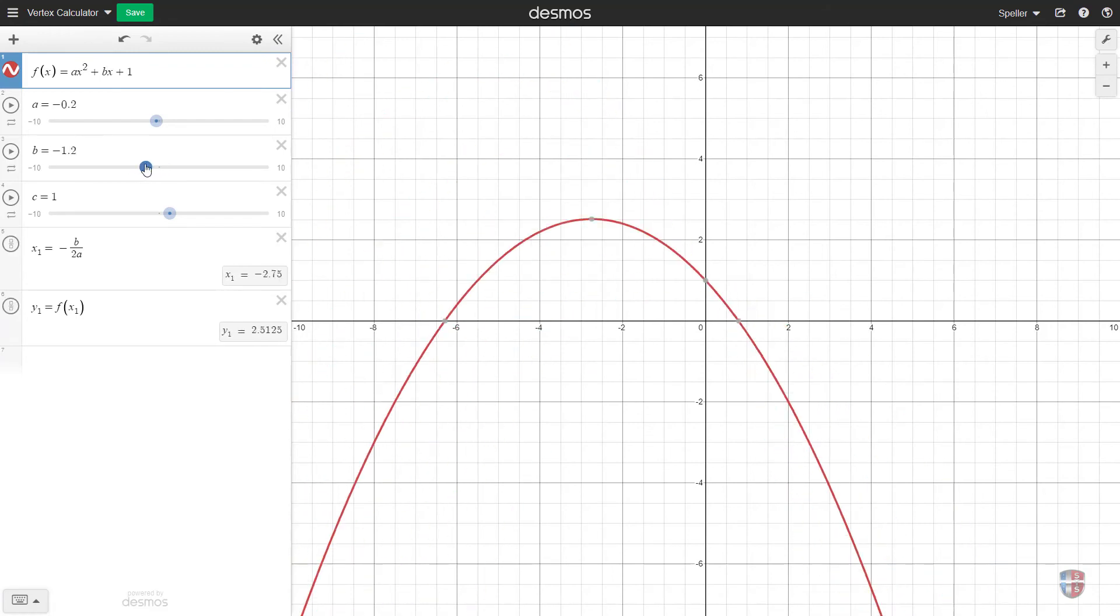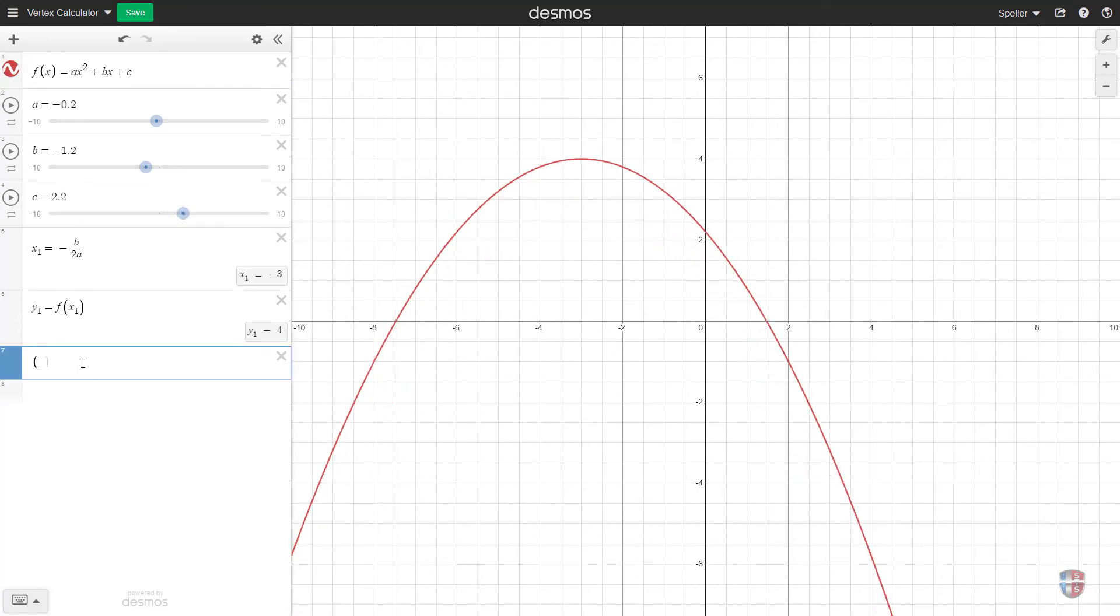And then I'm going to take this 1 and turn that into c, and then we see that's going to change or apply a vertical shift. And then let's create a point. Let's call that point x sub 1, because again that's going to give us the x value based off of the calculation or based off of the values entered for a and b.